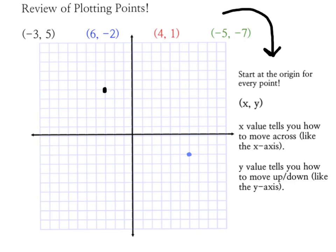Our next point is (4, 1). I go back to the origin. I'm going to be moving across positive 4 and then up positive 1. And my point's going to go right here.